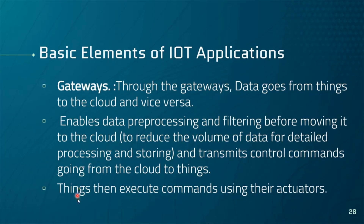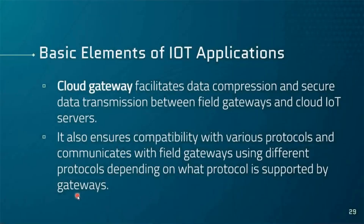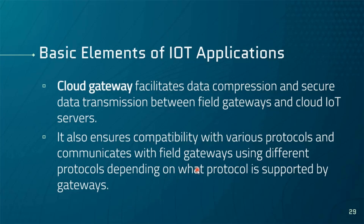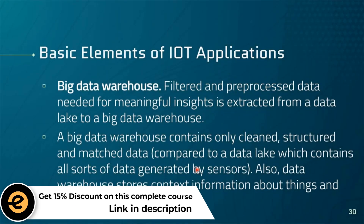Cloud gateways are gateways in the cloud. They facilitate data compression and secure data transmission between field gateways and cloud IoT servers. They also ensure compatibility with various protocols, communicating with field gateways using different protocols depending on what is supported. This corresponds to what was mentioned in the last lecture as the bus layer and event processing layer.